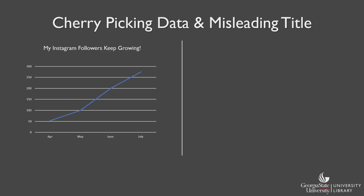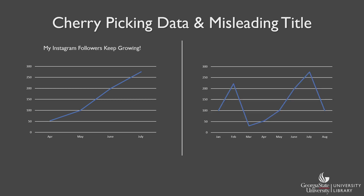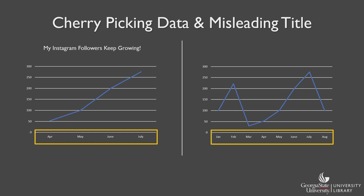Like with the last example, using certain headlines or titles for your data visualizations can be a way to shape the story you want to tell with your data. Unfortunately, titles can be a source of misleading or inaccurate information. Say your friend is trying to convince you that they are on their way to becoming a social media influencer, and they show you a graph that looks like a steady incline in followers. But your friend wouldn't want to show you the graph that includes a longer time frame, because it indicates they've actually lost a bunch of followers, started gaining followers back, only to lose them again. This is an example of cherry picking your data, where you only show the data that supports your argument or agenda.